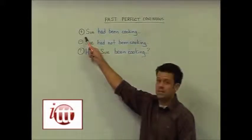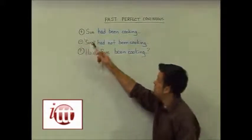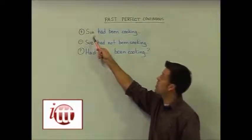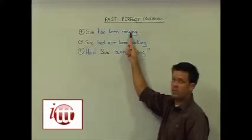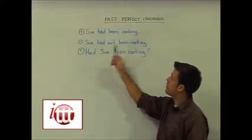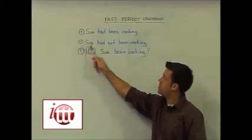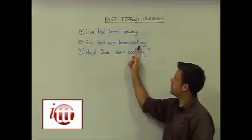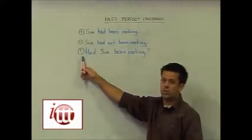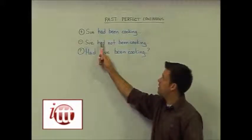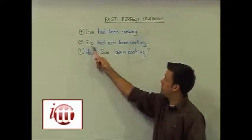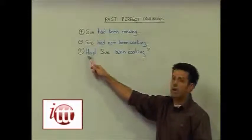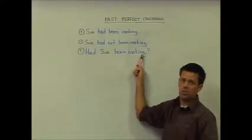For positive sentences we start with our subject: 'Sue had been cooking.' The negative sentence would be 'Sue had not been cooking.' And in order to ask our question, again we use inversion of the subject and 'had', so it comes out: 'Had Sue been cooking?'